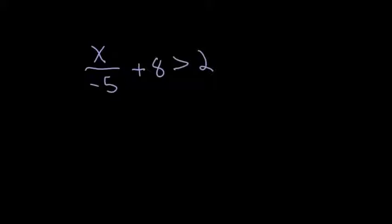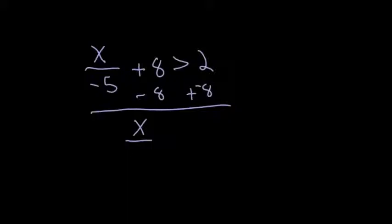One more example. I have x divided by negative 5 plus 8 is greater than 2. First step: get rid of the addition, so I subtract 8 from both sides. You can think of subtracting 8 as adding negative 8. So I have x divided by negative 5 is greater than 2 plus negative 8. Different signs, so I subtract them — 8 minus 2 is 6, and 8 has greater absolute value so I keep its sign, which is negative. So x divided by negative 5 is greater than negative 6.